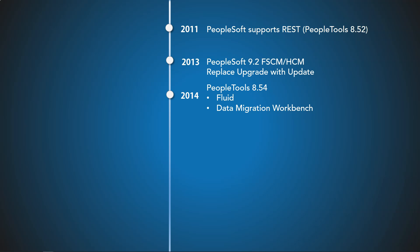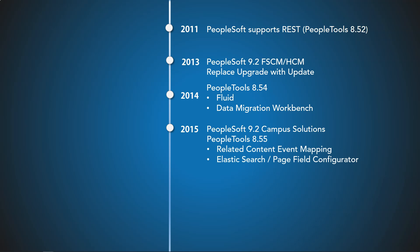In the same version, PeopleSoft released the Data Migration Workbench, which allows migrating application data from one environment to another by simply logging into the PeopleSoft application instead of using SQL scripts. For example, to migrate all business unit definitions from one environment to another, you can now do it through PIA using the Data Migration Workbench. In 2015, PeopleSoft released Campus Solutions 9.2.